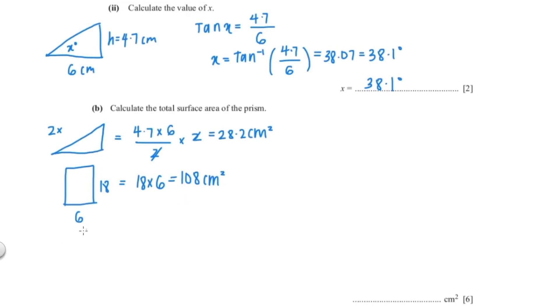Now for our next rectangle it would be 18 and 4.7 so 18 multiply by 4.7 and that would give you 84.6 cm². Now for our last rectangle we know that is 18 and this length. So to calculate that length I would use the Pythagoras theorem.